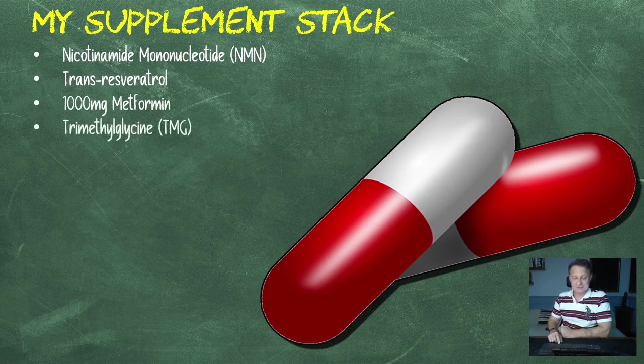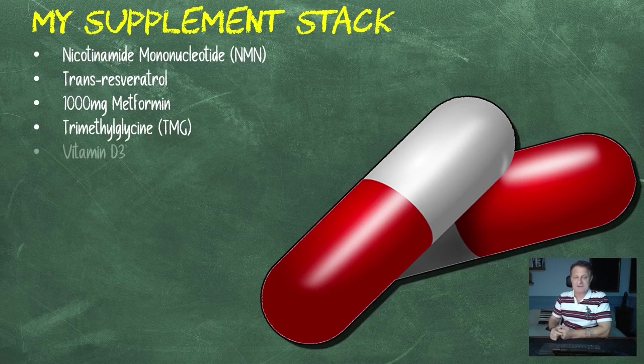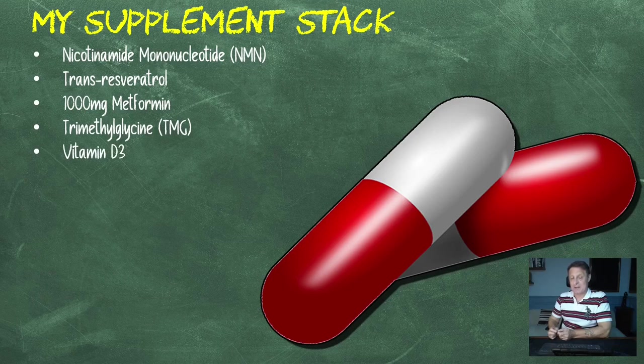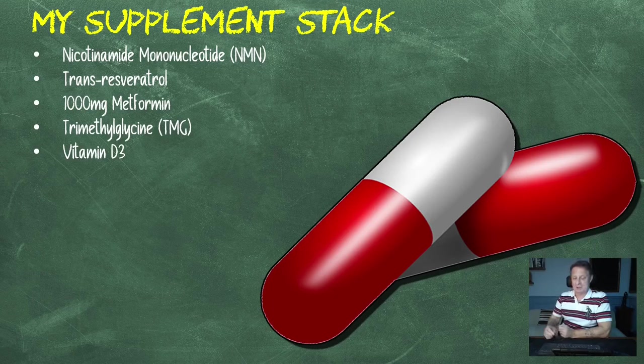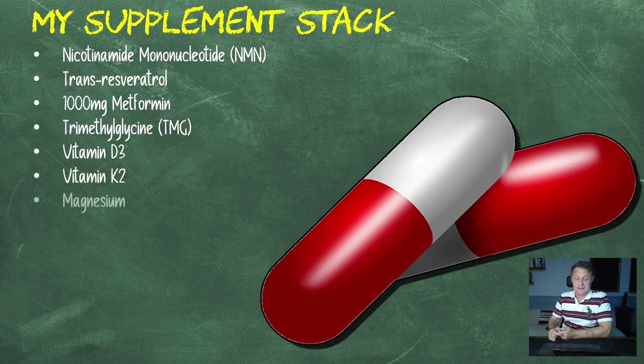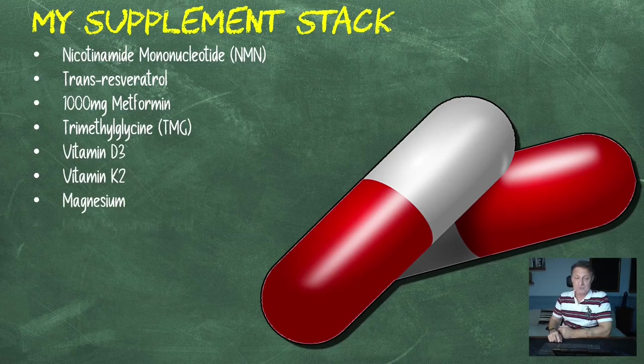1.5 grams of TMG, trimethylglycine. 5,000 international units of vitamin D3. I used to take 10,000 twice a week, but my last blood test showed I was right up in the sufficient range, bordering on getting close to toxic. So I'm back down to 5,000 a day. 120 micrograms of vitamin K2, the MK7 version. 250 milligrams of magnesium, the L-theanine version. 200 milligrams of high molecular weight hyaluronic acid.